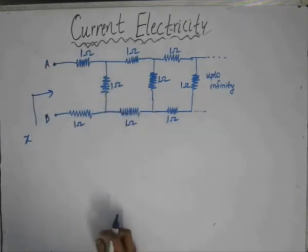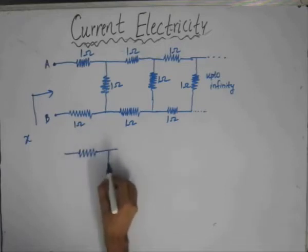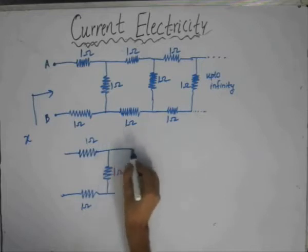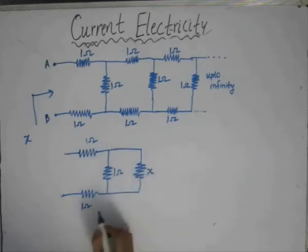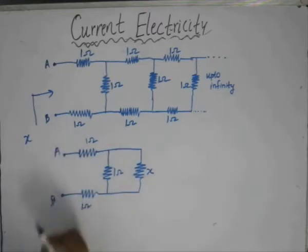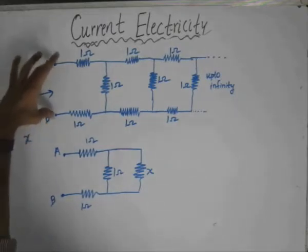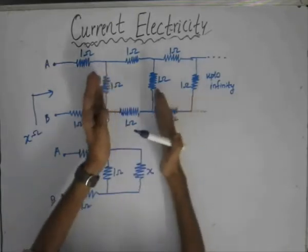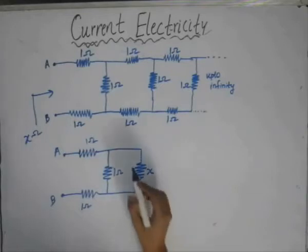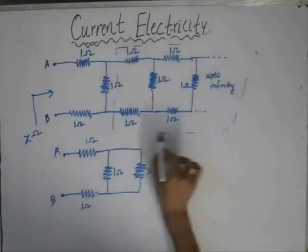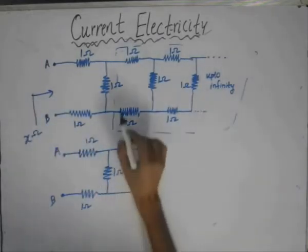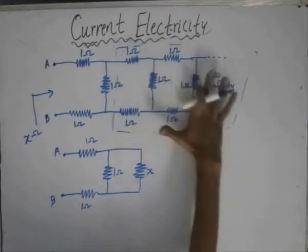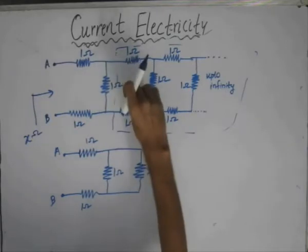We can reduce this circuit such that this can also be written as approximately x. We have assumed that the equivalent resistance between points A and B is x ohm. Since this was an infinite ladder, this structure is periodic and repeating, so we can replace the entire infinite block again by a resistance of x ohm. We have connected the equivalent resistance in parallel — instead of the whole infinite ladder, we have substituted this part with x ohm.